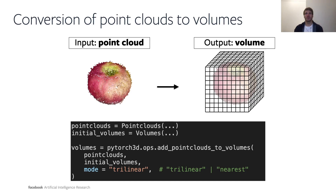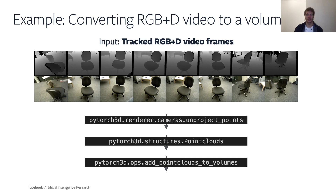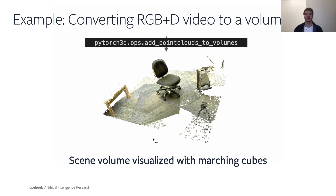One more important operator implemented for volumes is a conversion of point clouds into volumetric grids. We have implemented a conversion which either trilinearly splits points onto the volumetric grid or just rounds them to it. A nice application is unprojecting or converting direct RGBD views into a common volume of the scene. Here we have taken a bunch of frames capturing a chair together with depth, unprojected these individual points, converted them into point clouds, and using this point cloud to volume operator, we generate a nice volume of the scene — in which we can see a chair being represented as a bunch of boxes.